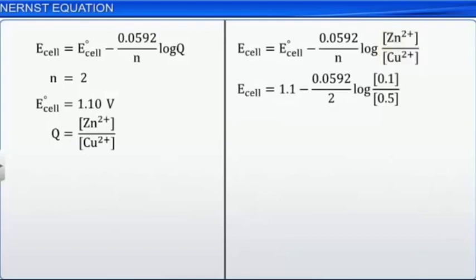The ratio for Q can be simplified as 0.1 divided by 0.5 equals 0.2. Now, it's a matter of simplification of the expression E cell is equal to 1.12 volts.